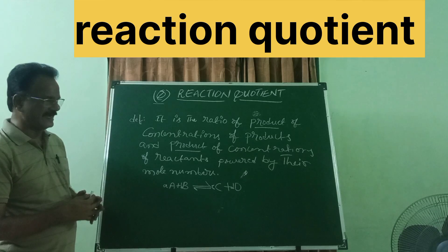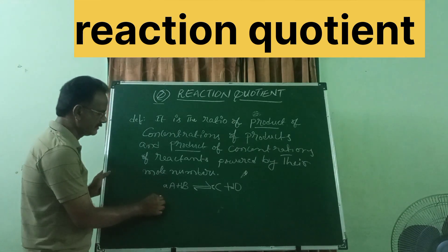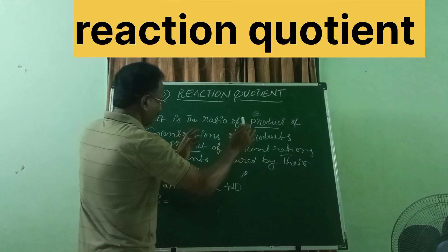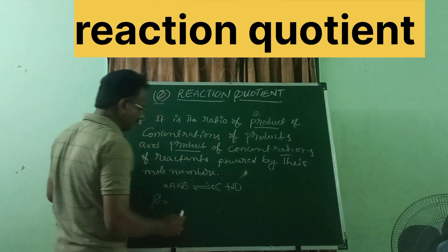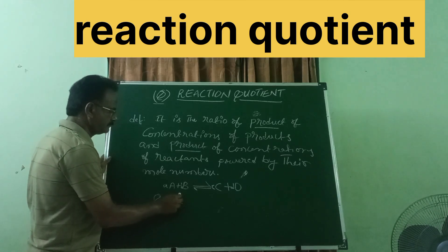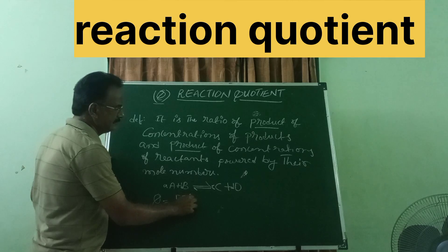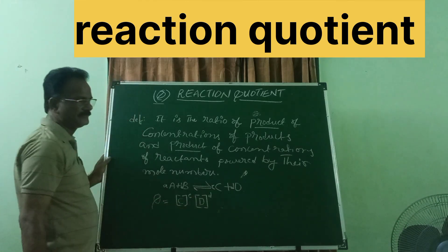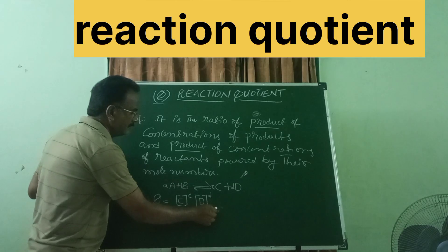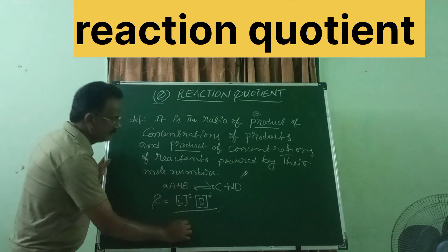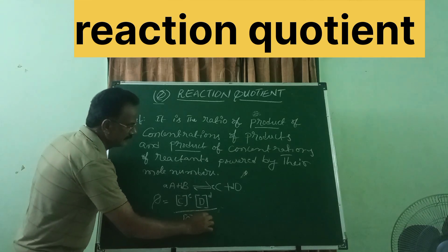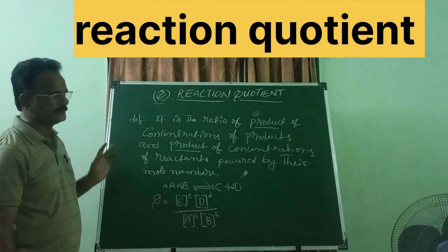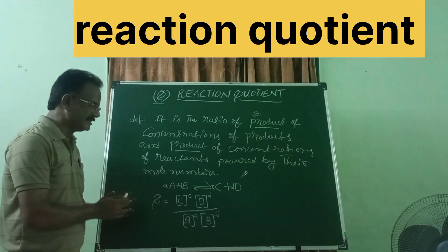Now let us write the reaction quotient. Reaction quotient Q is equal to — as per definition, we first take the product of concentration of products: [C] to the power of small c, multiplied by [D] to the power of small d. Divided by [A] to the power of small a, multiplied by [B] to the power of small b. This is the reaction quotient for this reaction.